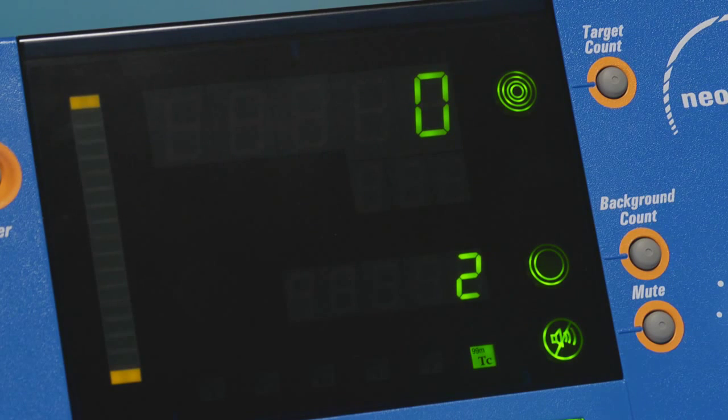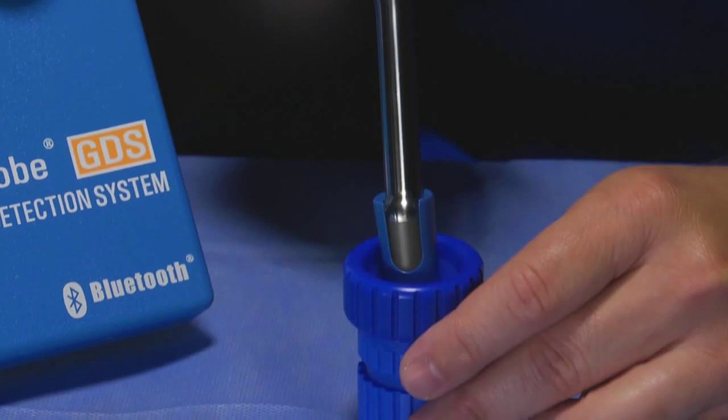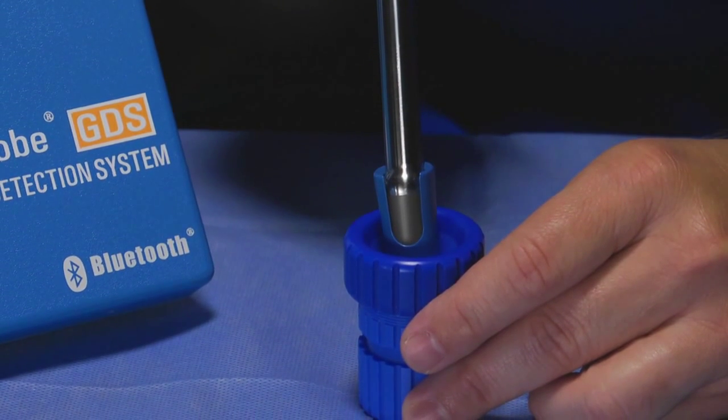The target count feature informs the user of the average number of counts per second detected during the one to six seconds the system calculates the target count. Hold the probe stationary over the target area and press and release the target count button.